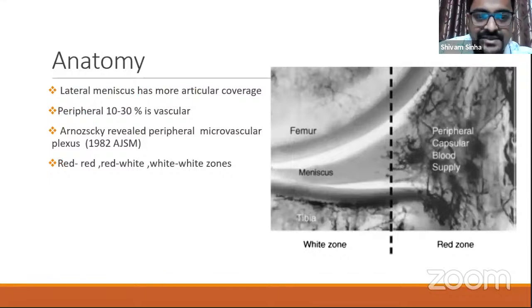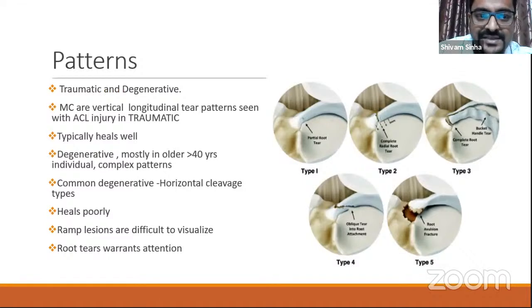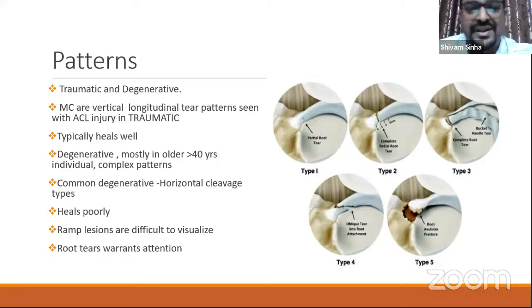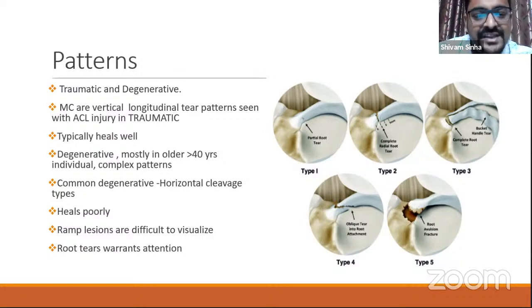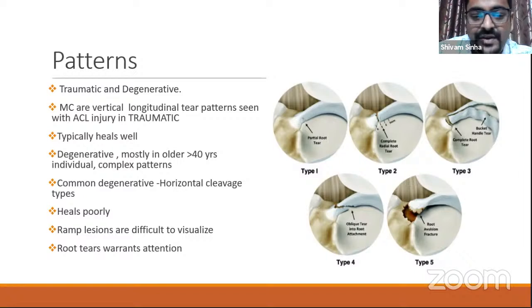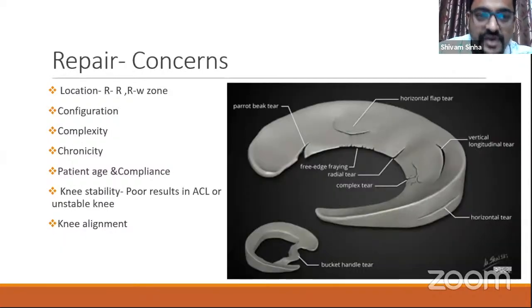The lateral meniscus is more articular, has more coverage, and both menisci are peripherally vascular. Regarding injury patterns and modes: treatment must be individualized. Traumatic injuries — the most common being ACL injury with vertical longitudinal tear patterns — usually heal well. Degenerative tears in older people are commonly horizontal cleavage types and may heal poorly. Ramp lesions are a newly recognized entity that are difficult to visualize. Root tears warrant special attention, with a classification system for them.